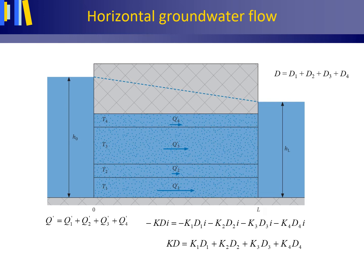This picture shows us steady groundwater flow through four horizontal homogeneous layers in a confined aquifer between two fully penetrating canals with different water levels. Groundwater flow is steady or stationary and the boundary conditions are fixed. This means that the hydraulic gradient is the same for each layer.